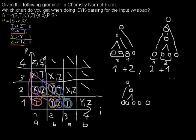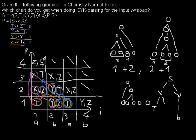I can draw you the parse tree. We have the starting symbol S, which we got from X and Y. From this Y you can derive B. From X you can derive T and Y. From T you derive A, and from that Y you can derive Y and T. From that T another A. The tree corresponds exactly to reading the chart bottom-up.